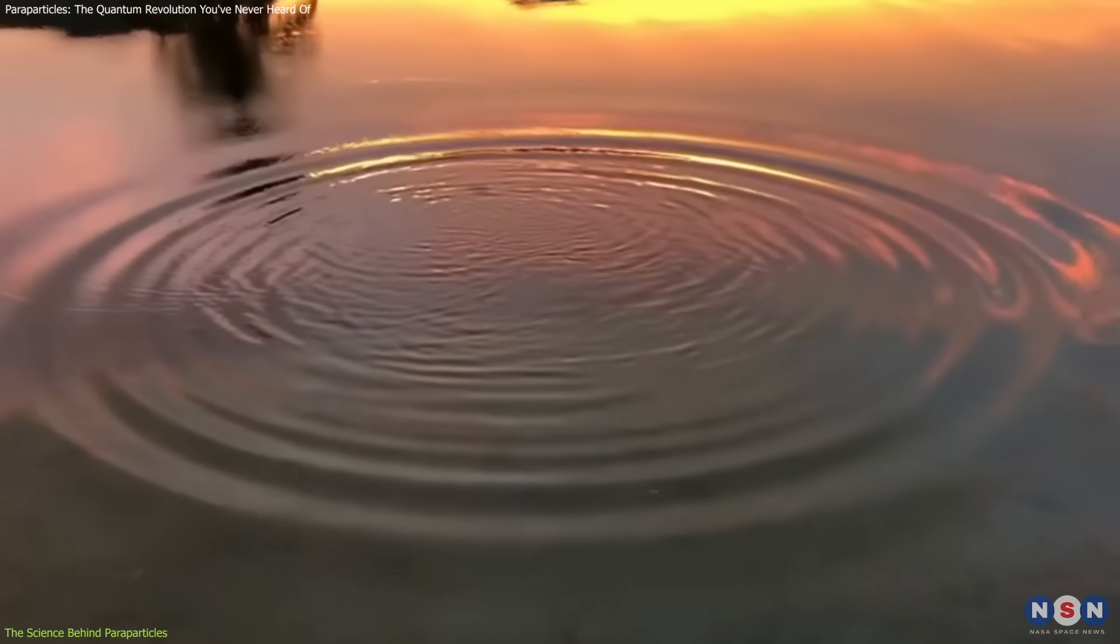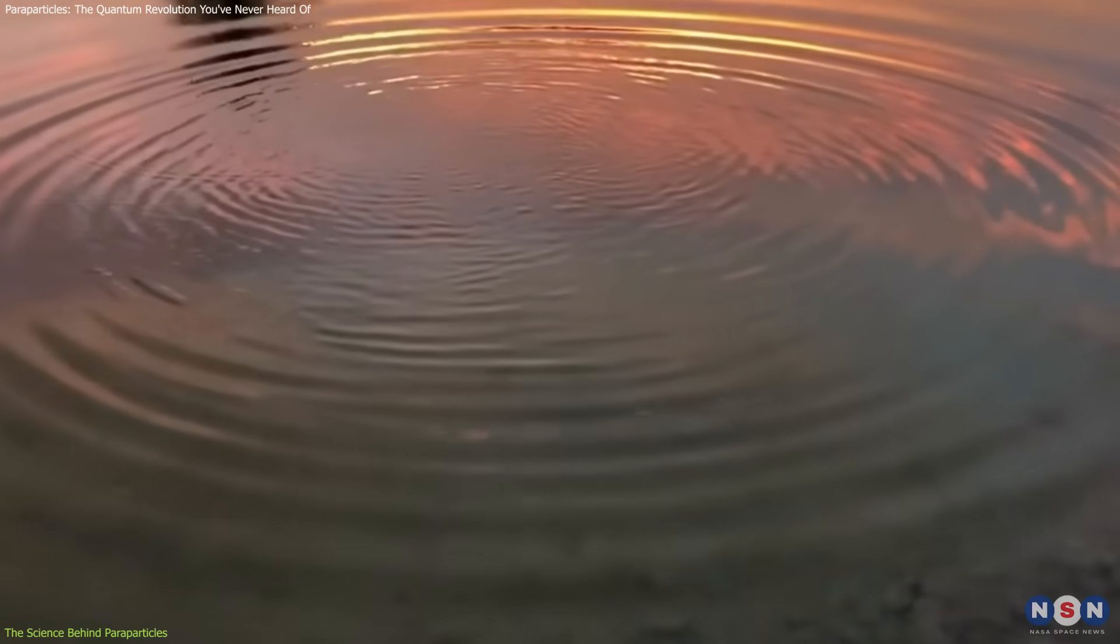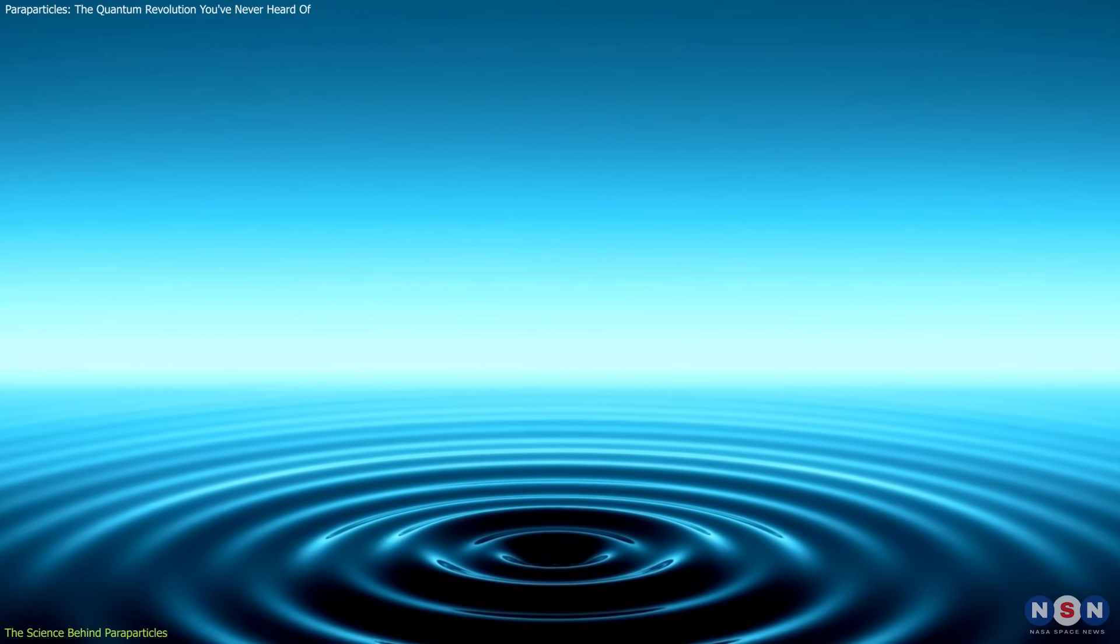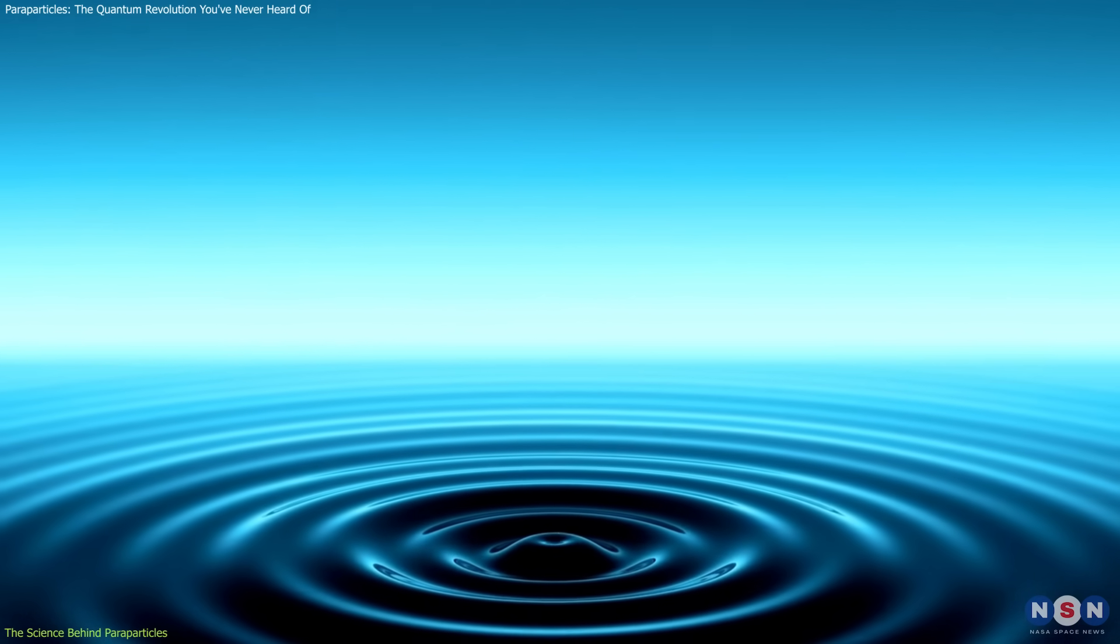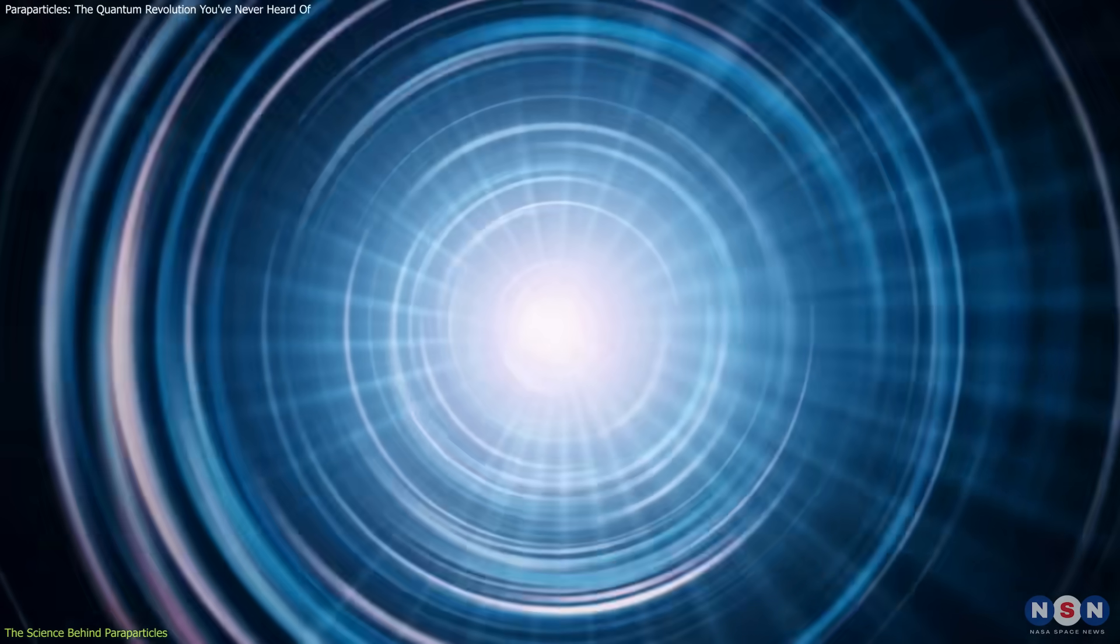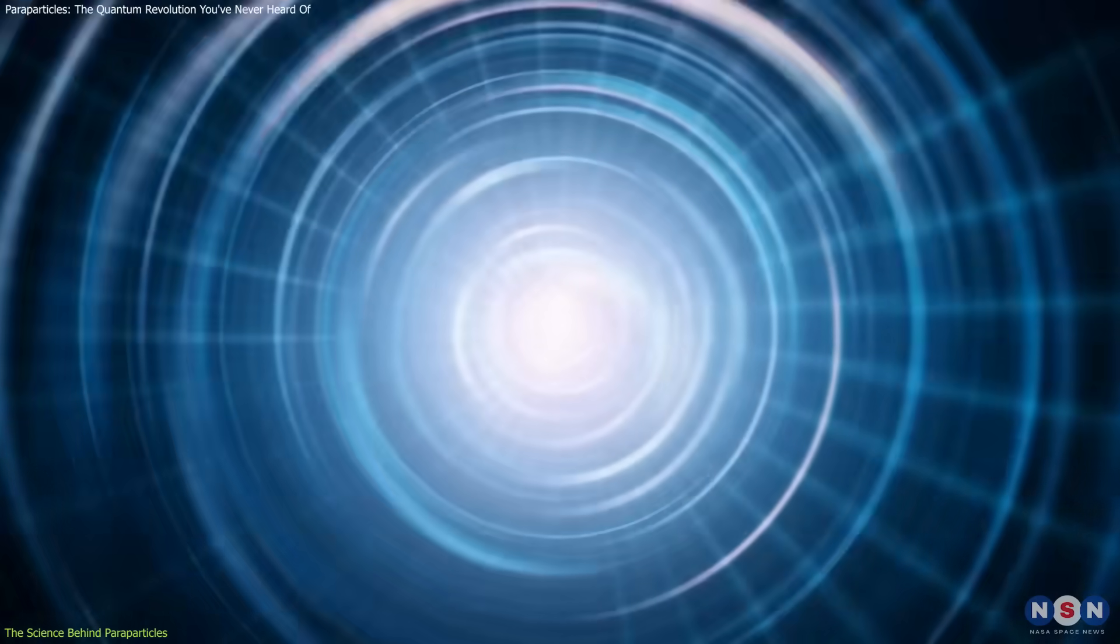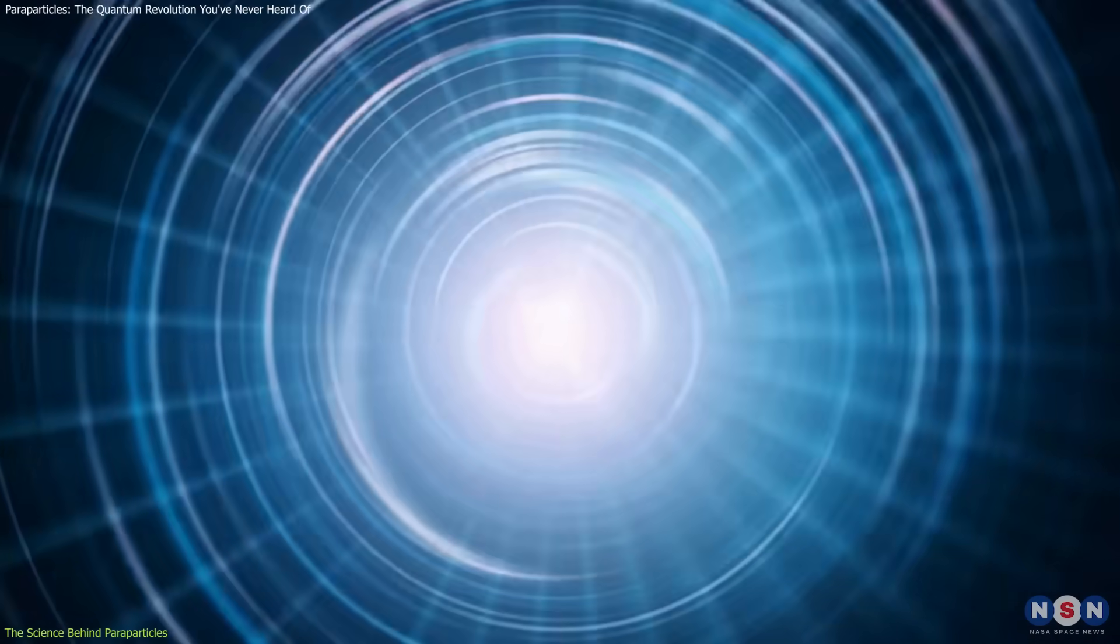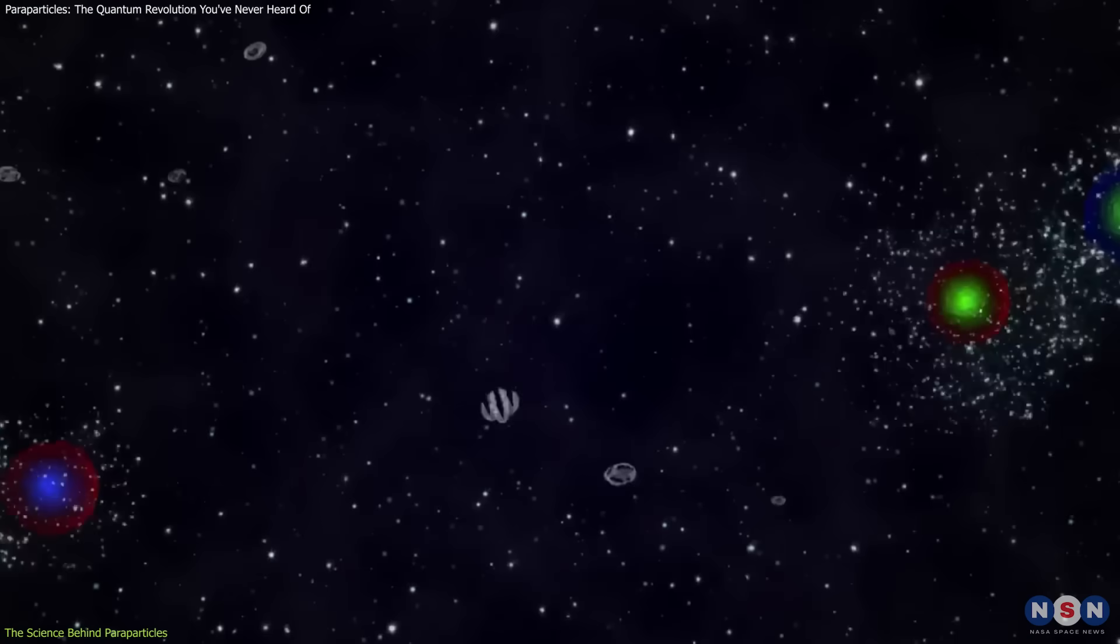Imagine you're looking at a calm lake, and suddenly ripples appear out of nowhere. Those ripples aren't solid objects, but they're real and follow their own rules. They emerge in condensed matter systems, like magnets, and exhibit behaviors that challenge everything we know.